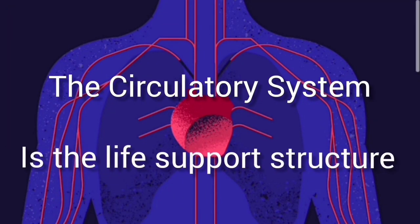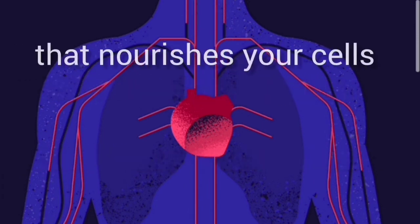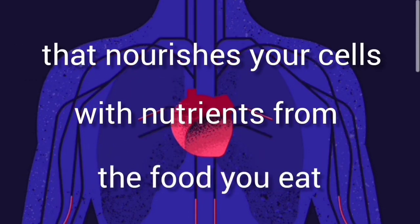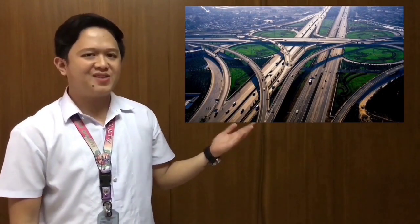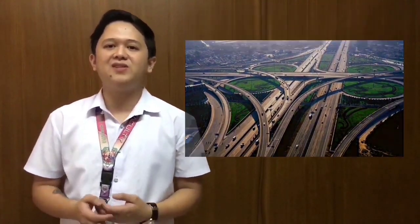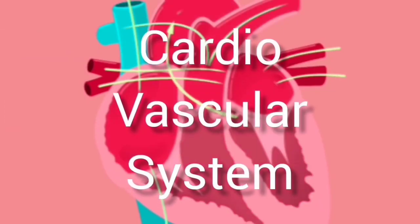Now that we have a basic understanding of how the respiratory system works, what about the circulatory system? How does it exactly work? The circulatory system is the life support structure that nourishes your cells with nutrients from the food you eat and the oxygen from the air you breathe. It can be compared to a complex arrangement of highways, avenues, and lanes connecting all the cells together into a neighborhood. The community of cells sustains the body to stay alive. Another name for the circulatory system is what we call the cardiovascular system.